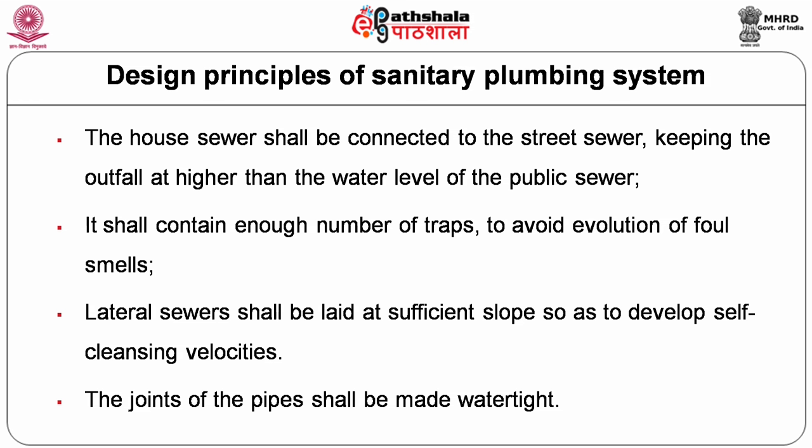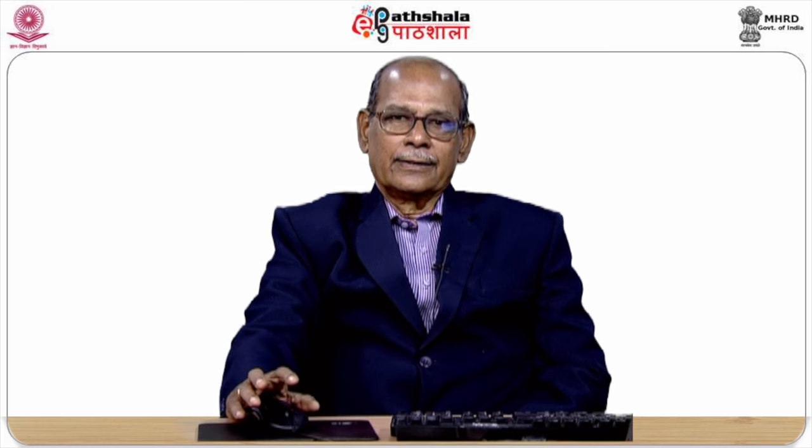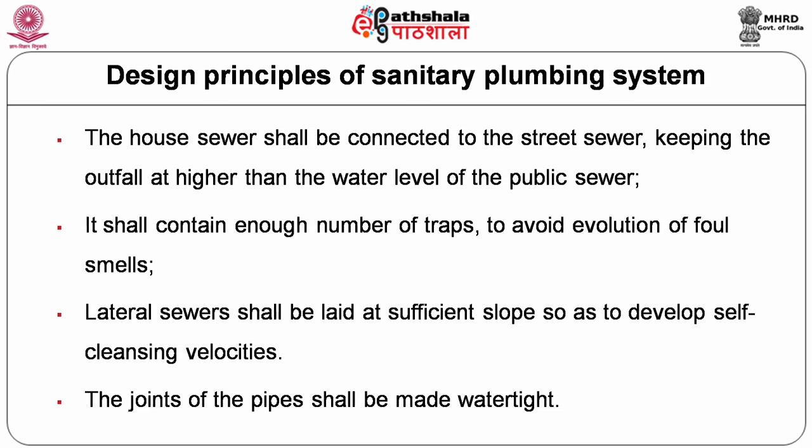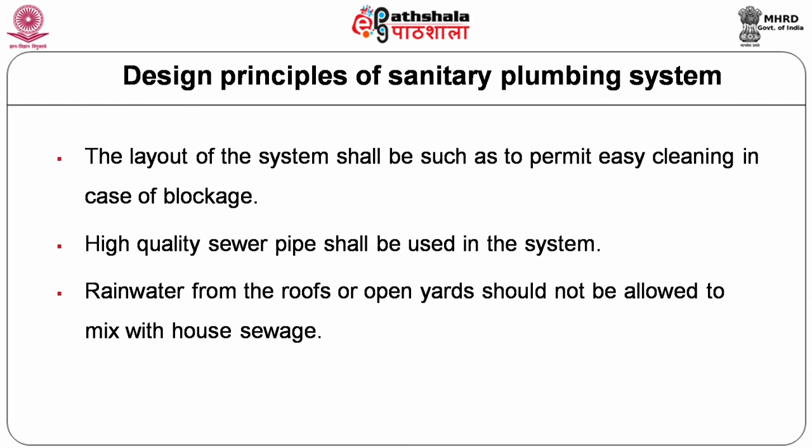The house sewer shall be connected to the street sewer, keeping the outfall at a higher level than the water level in the public sewer, with a continuous slope toward the street sewer. Sufficient traps must be provided to avoid foul gas entering the household. Lateral sewers shall be laid with sufficient slopes. All joints are made watertight to avoid leakage, and the layout should permit easy cleaning in case of blockages.